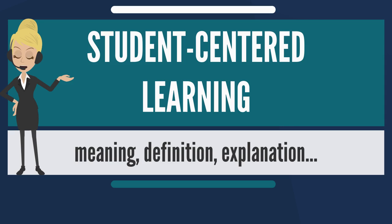In a student-centered learning space, students choose what they will learn, how they will learn, and how they will assess their own learning. This is in contrast to traditional education, also dubbed teacher-centered learning, which situates the teacher as the primarily active role while students take a more passive, receptive role. In a teacher-centered classroom, teachers choose what the students will learn, how the students will learn, and how the students will be assessed on their learning.